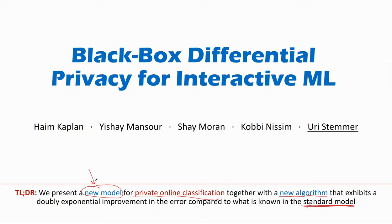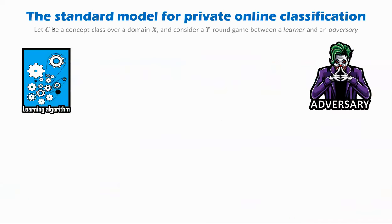Before I tell you about the new model and new results, let me first recall what is the standard model for private online classification. In the standard model, we assume there is some concept class C over a domain X, and we consider a T-round game between a learning algorithm and an adversary. In every round, the adversary first specifies a point, we respond with a hypothesis that should be able to predict the label of that point, and then the adversary tells us what the true label is.